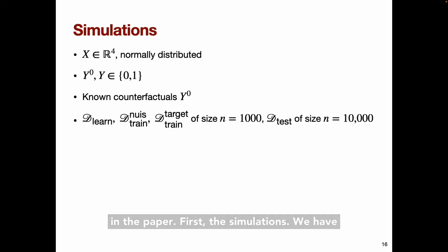First, the simulations. We have four continuous covariates, binary outcomes. We use samples of size 1000 for learning and training, and we use a test set of size 10,000 to get the loss and fairness values. Since the counterfactuals are known here, we don't need to split the test set into nuisance and target sets.